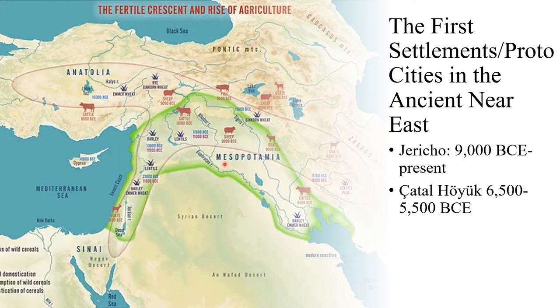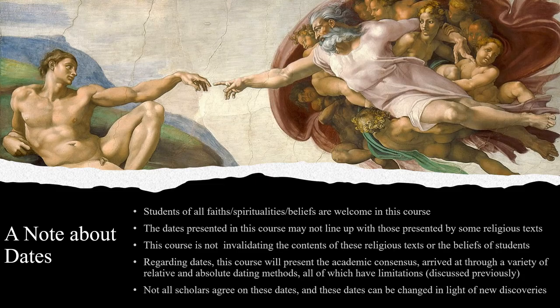Specifically, within these two regions, we're going to discuss the settlement of Jericho and the settlement of Chatalhuyuk. Jericho was in the Levantine region and Chatalhuyuk was in Anatolia. Before moving forward, I wanted to give a couple of comments about the dates that I'm going to be using in this lecture and throughout the course.